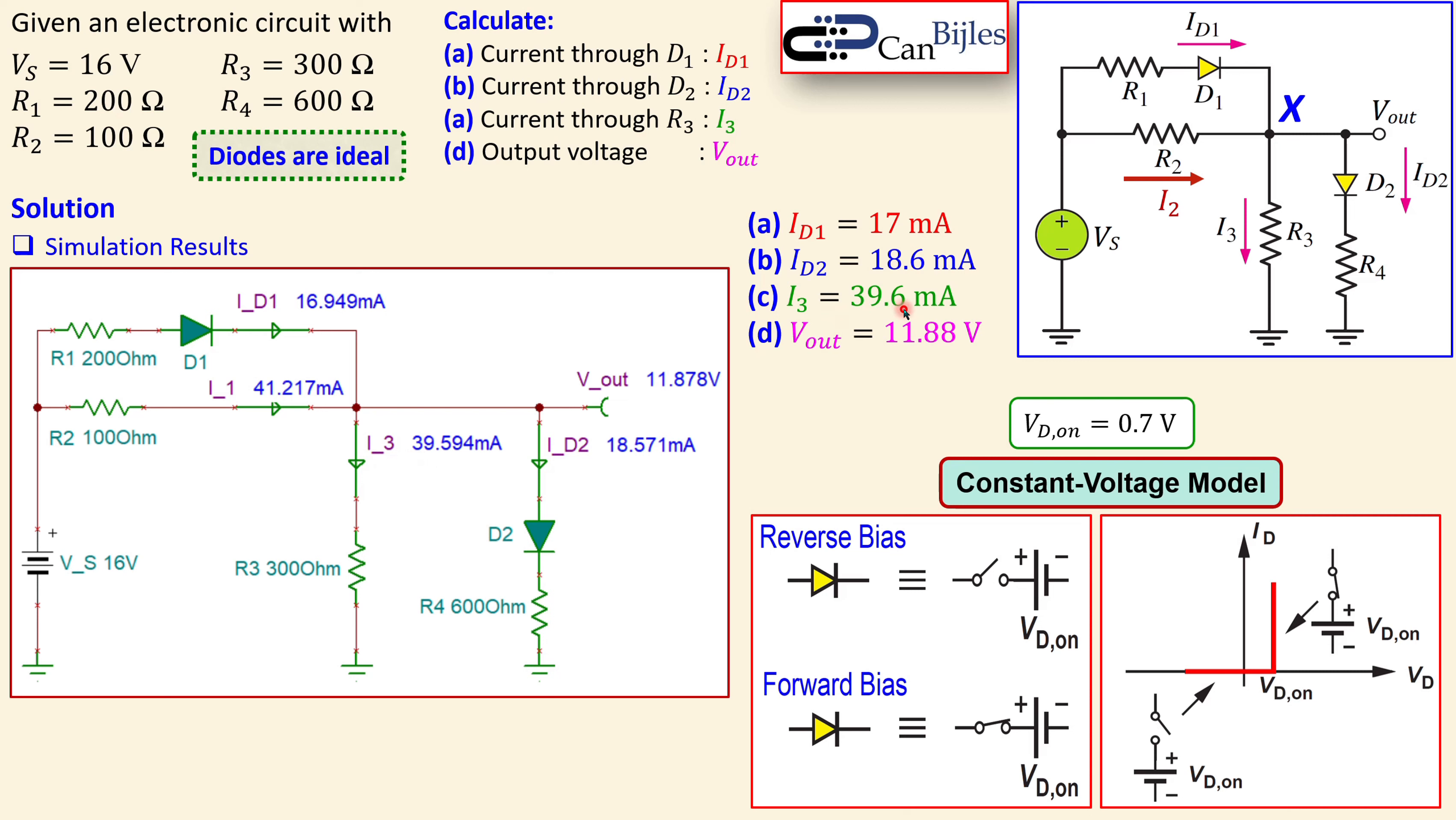And the Vout is 11.878, very close to what we have, 11.88. So this is the verification that the results are indeed correct. And you see the I2, I1, I2, I3, etc. Those are very close to what we have calculated.